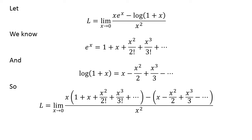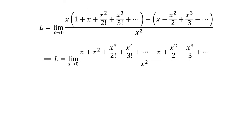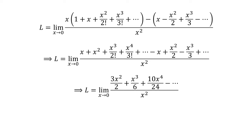Let us apply these expansions in the limit L. After taking off the brackets and adding like terms in the numerator, we get L is equal to the limit of 3 upon 2 times square of x plus cube of x upon 6 plus 10 upon 24 times x raised to the power of 4 minus so on, upon square of x, as x approaches 0.